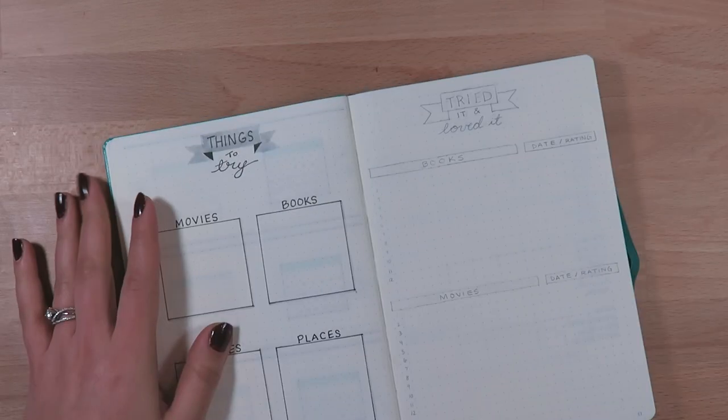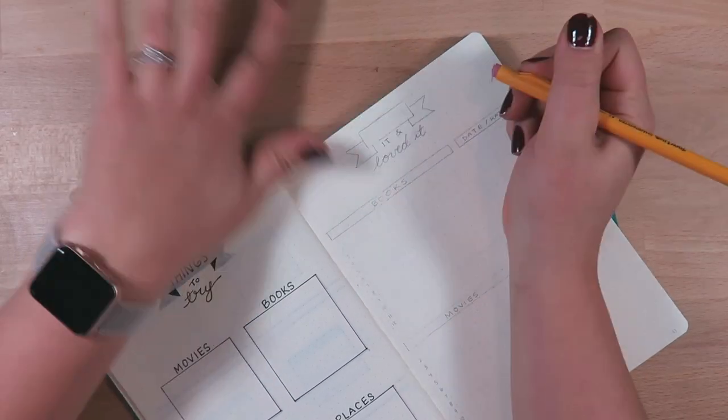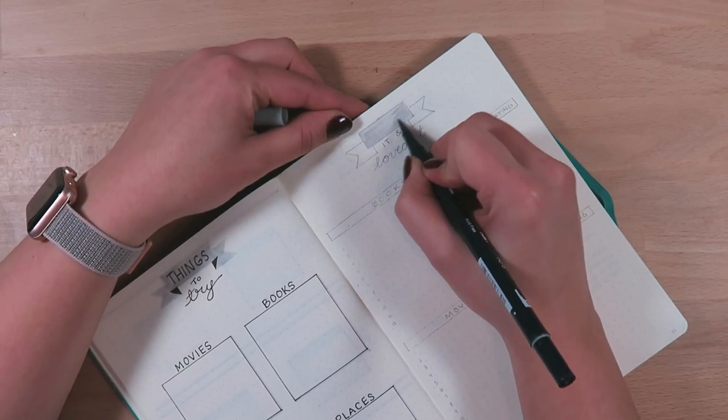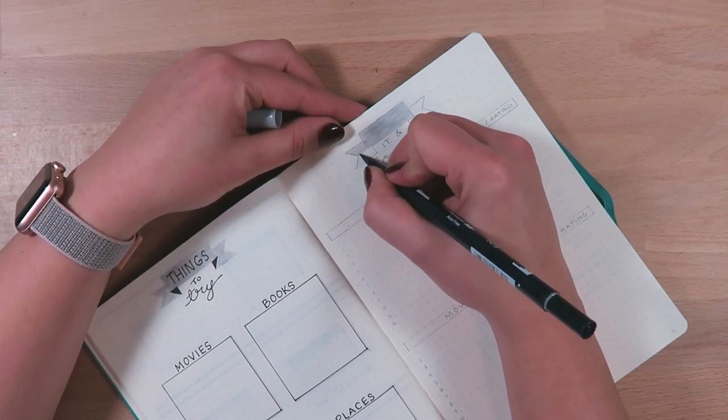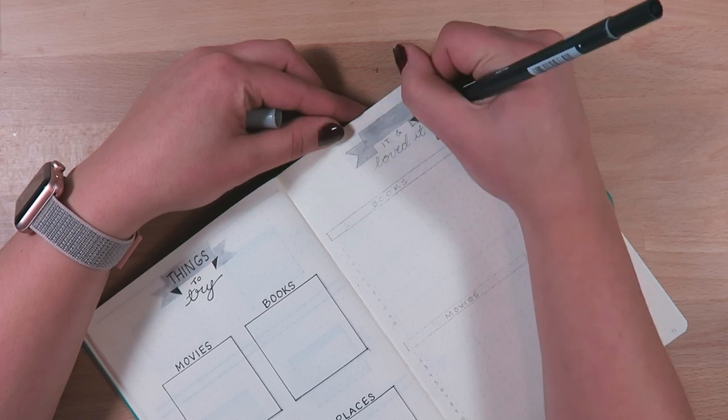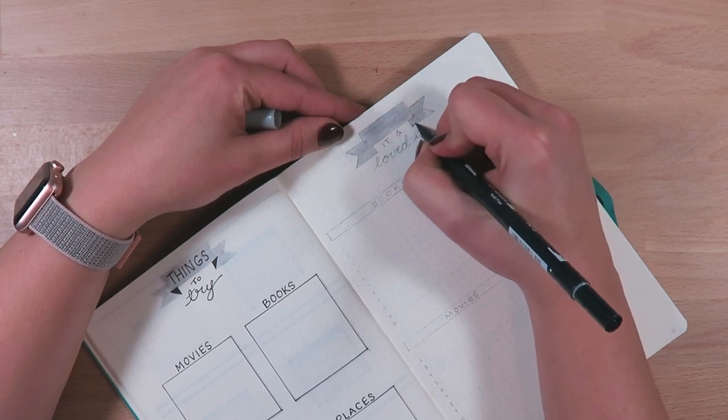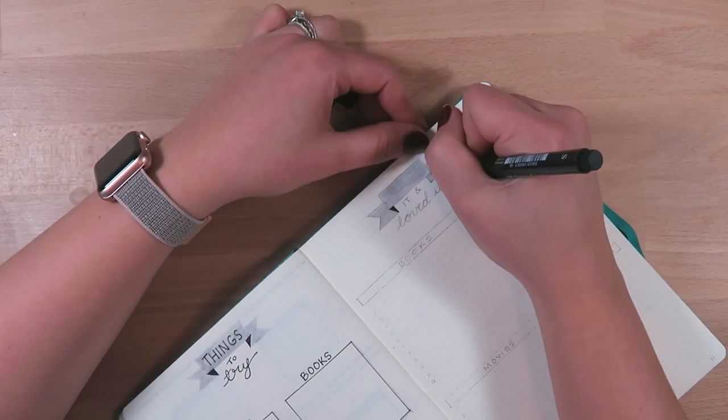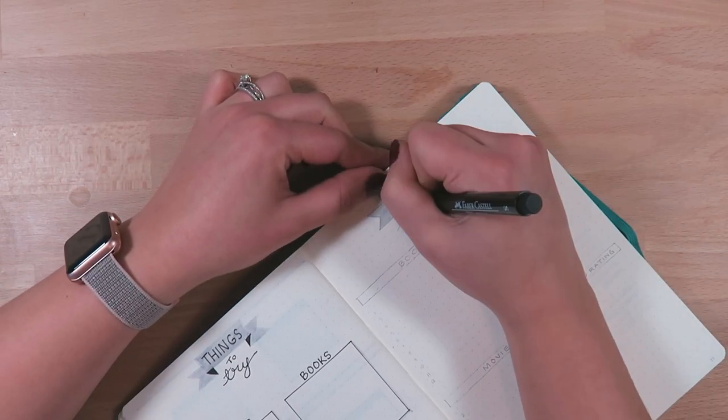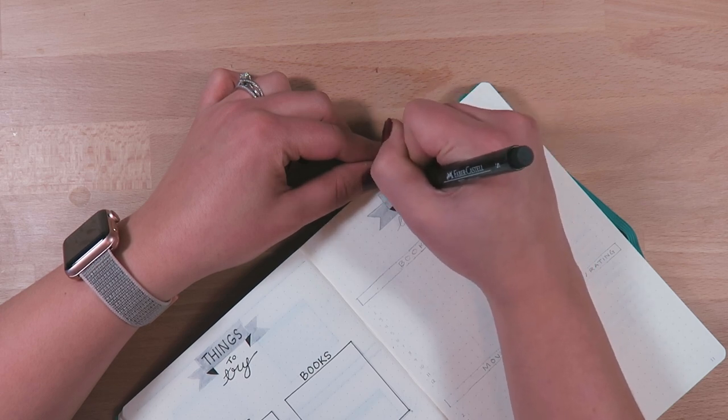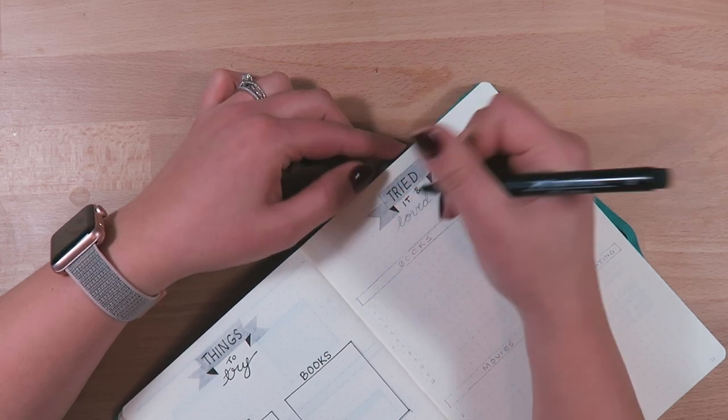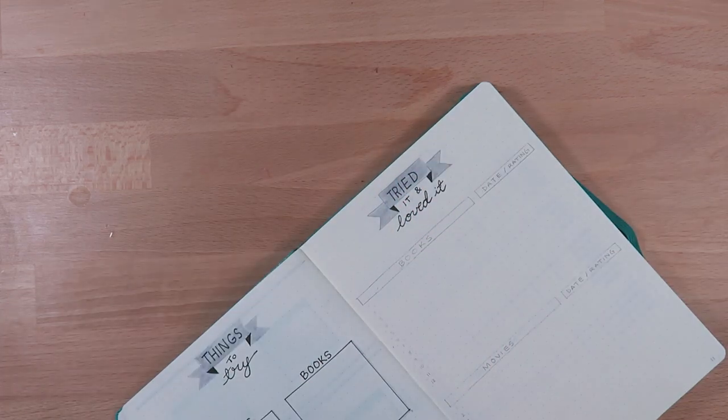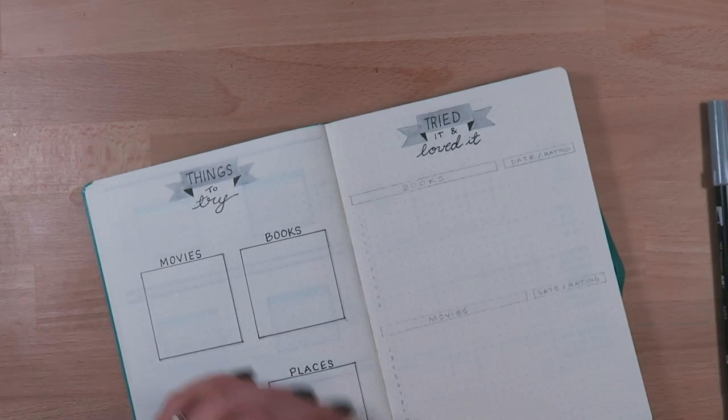These two spreads that I'm doing here are things to try. I'm sticking with this box thing by the way, I'm loving the box and just the simple ribbon headers. It just feels simple and easy, easy to replicate and it makes it all tie together. But the things to try page on my old bullet journals I had a full page for movies and a full page for books and recipes or places that I wanted to go.